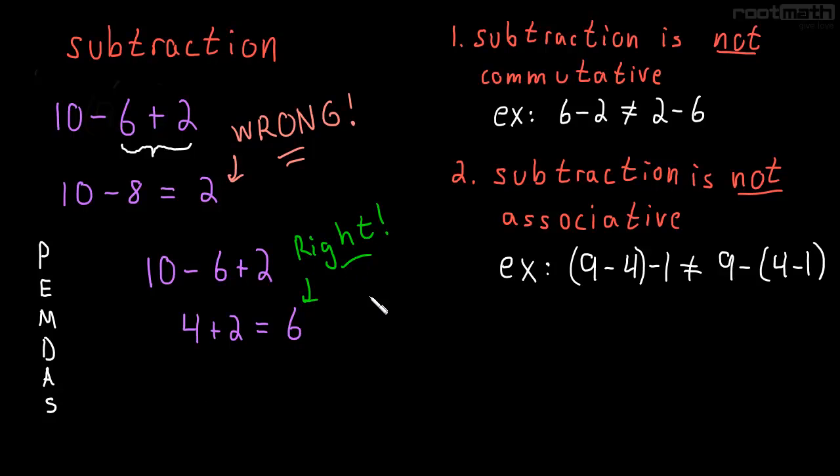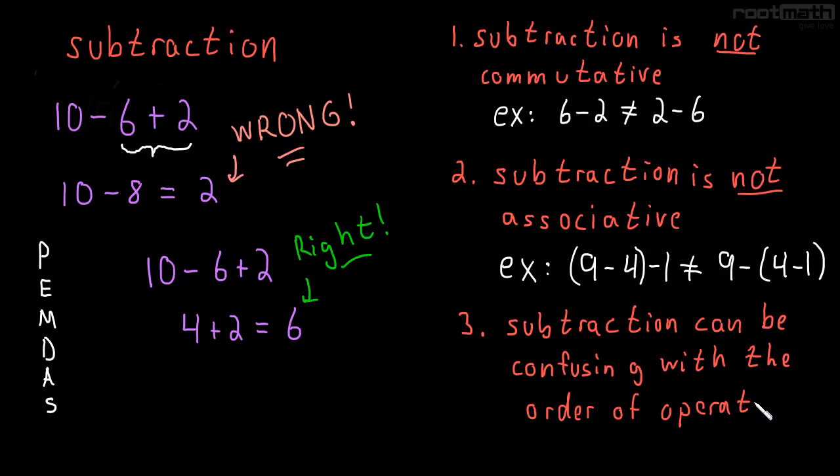So the third reason subtraction isn't that great is because subtraction can be confusing with the order of operations if we're not careful. And our example for this one is 10 minus 6 plus 2.